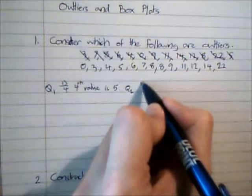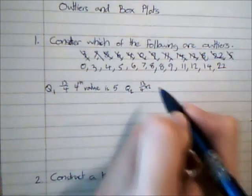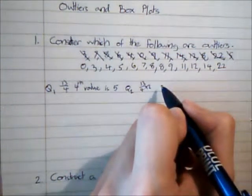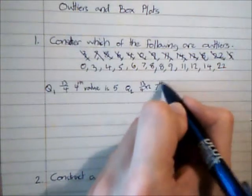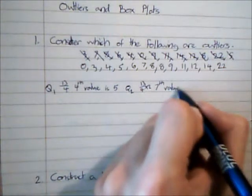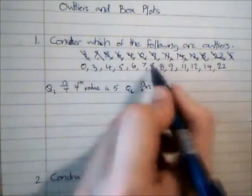Q2 is 13 over 4 times 2, which is going to be 6 and a half, so that's going to use the 7th value, which is 8.